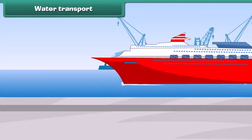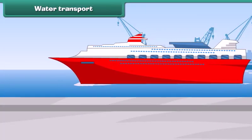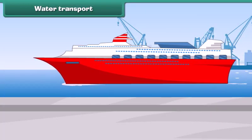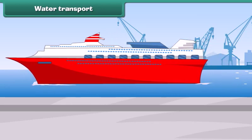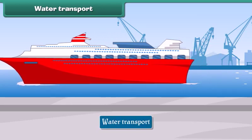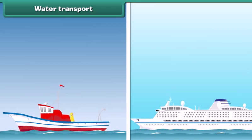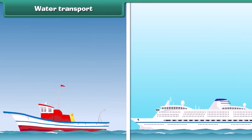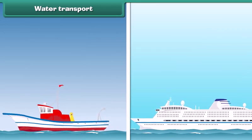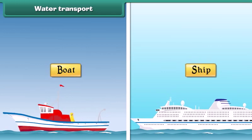Water transport: The movement of goods and passengers on water is called water transport. Goods and passengers are carried from one place to another, both within and outside the country, by means of boats and ships.